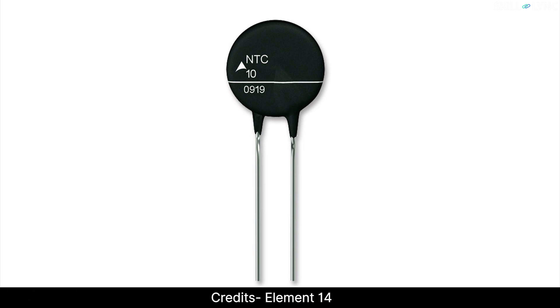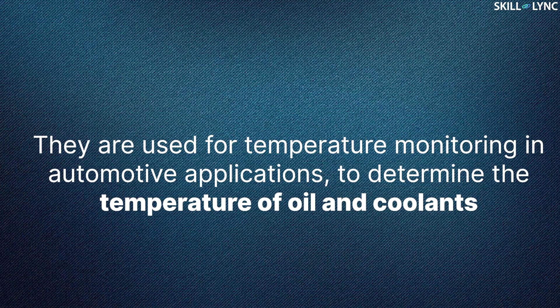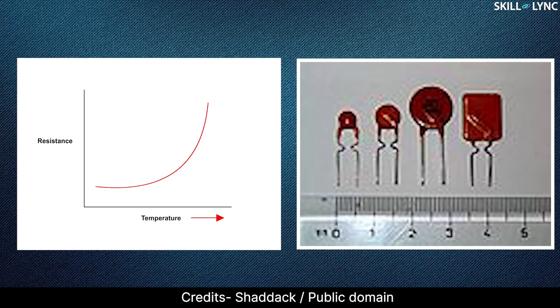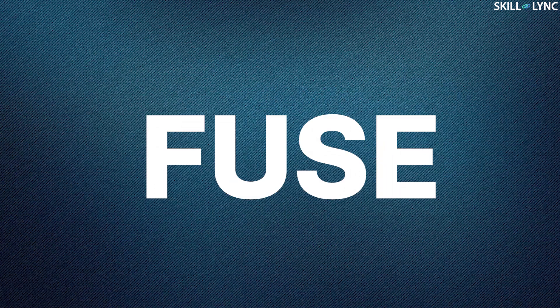They can either be of the type NTC or PTC. An NTC has a negative temperature coefficient, which means its resistance decreases as temperature increases. They are used for temperature monitoring in automotive applications to determine the temperature of oil and coolants, etc. A PTC or positive temperature coefficient shows increases in resistance as temperature increases. This is used for over-current protection — that is, to safeguard the appliances in case a larger-than-intended current flows through the conductor, for example a fuse.